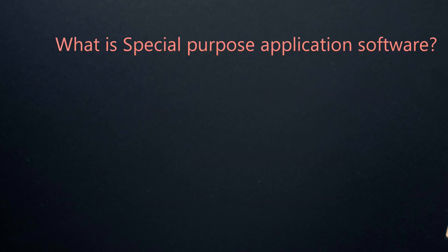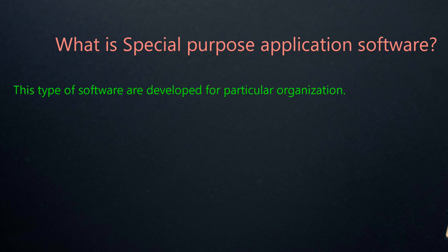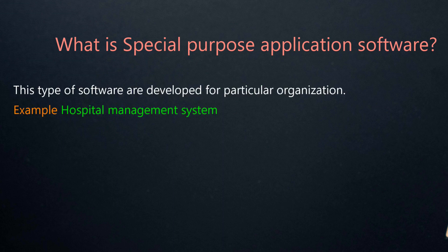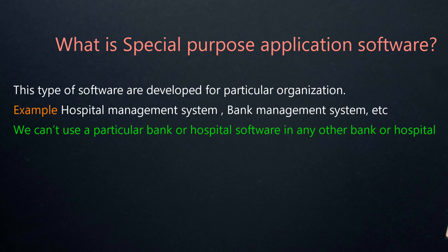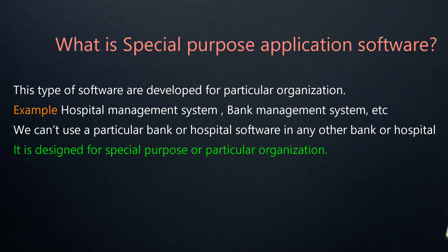Now, we are going to study what is special purpose software. This type of software is developed for a particular organization — for example, hospital management system, bank management system, etc. We cannot use a particular bank or hospital software in any other bank or hospital. That is, it is designed for a special purpose or a particular organization.